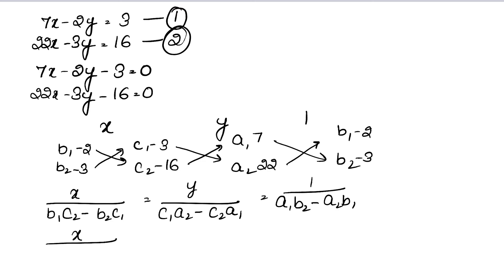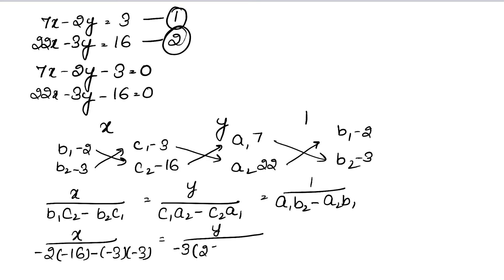Now we write the values. B1 was minus 2, into minus 16, minus minus 3 into minus 3, equals y. C1 was minus 3, A2 was 22. So: minus 3 into 22, minus minus 16 into 7, equals 1 upon 7 into minus 3, minus 22 into minus 2.